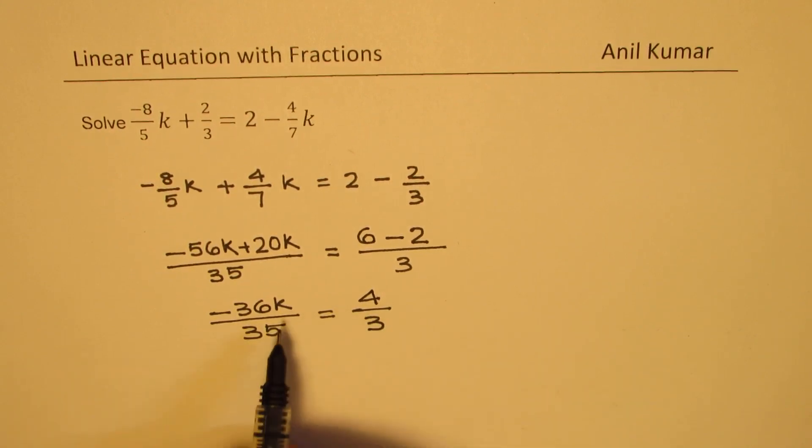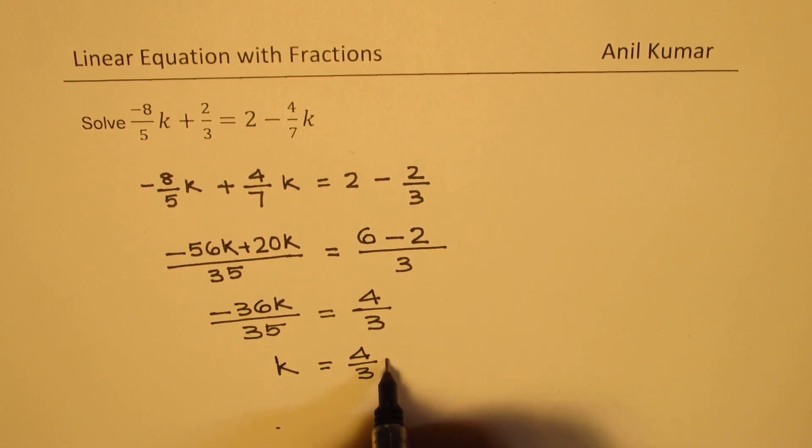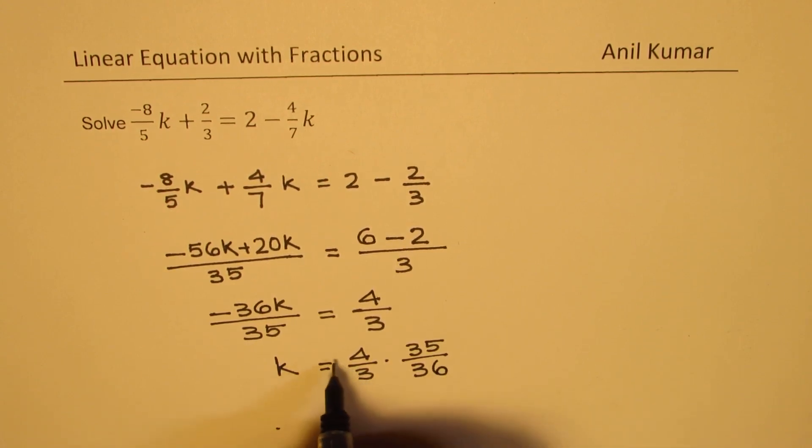Now we can again cross multiply to get what k is. So k will be equal to 4 over 3 times 35 over 36 with a negative, 35 over 36. And let me write this negative outside here. So this negative has come because of this minus 36.